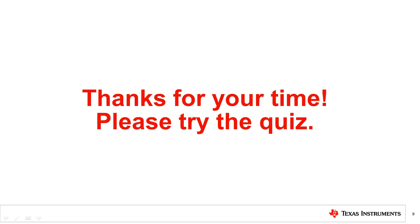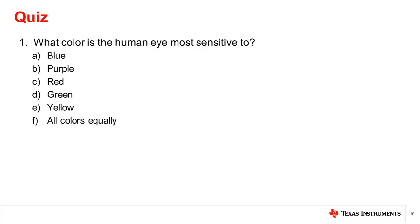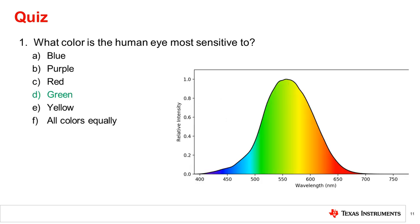Thanks for taking the time to watch this video. Please try the following quiz. Question 1: What color is the human eye most sensitive to? Based on the spectral response plots, the human eye is most sensitive to the color green.